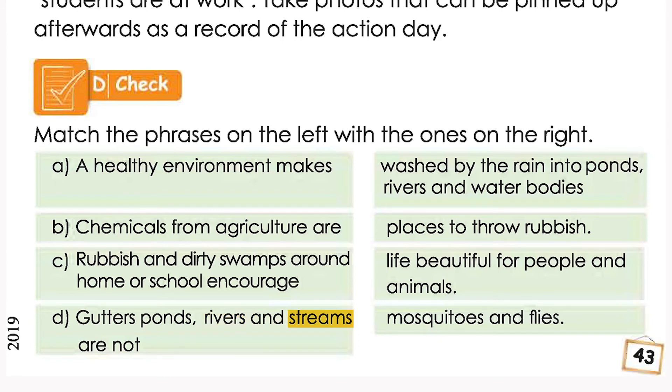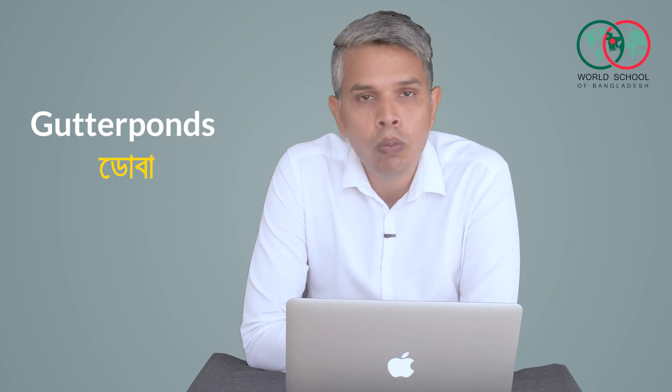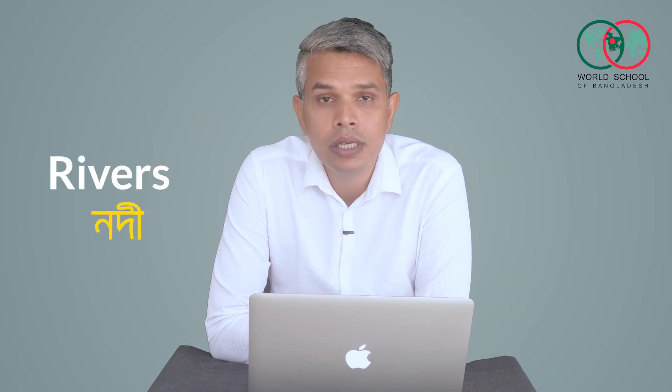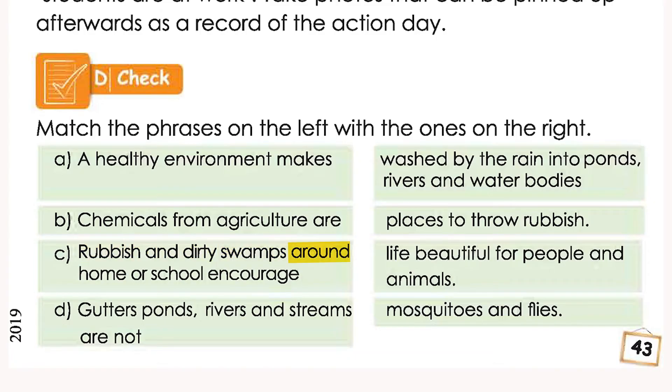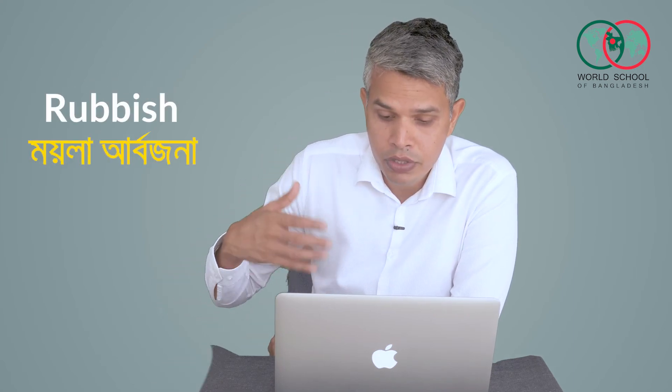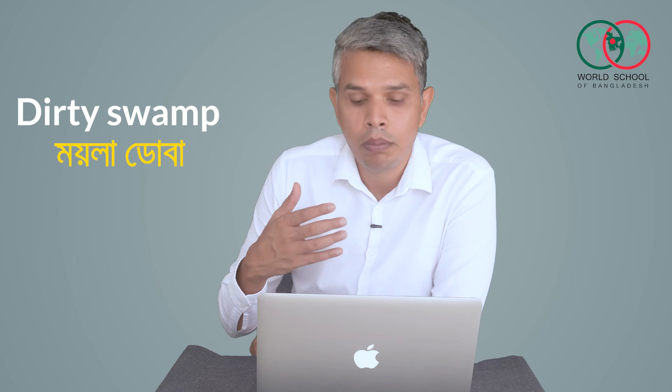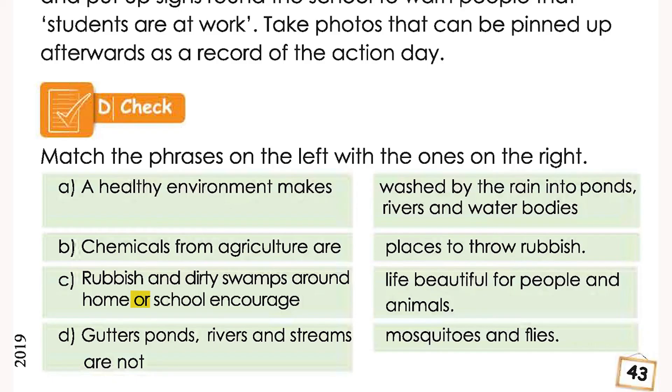Gutters, ponds, rivers and streams are not places to throw rubbish. Rubbish and dirty swamps around home or school encourage. Dirty swamps mean dirty ponds.